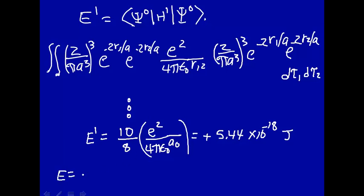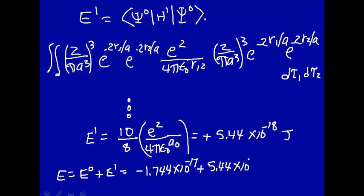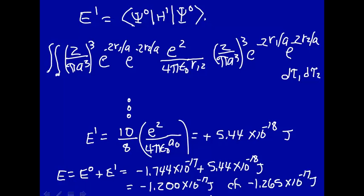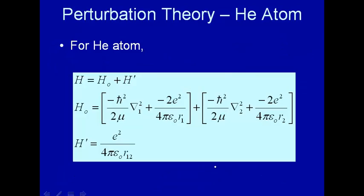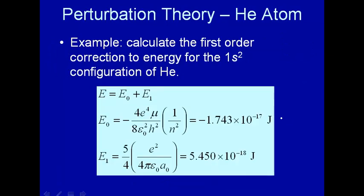So now our energy to first order is E0 plus this first-order correction. E0 was −1.744×10⁻¹⁷ J, plus 5.44×10⁻¹⁸ J, which comes out to approximately −1.2×10⁻¹⁷ J. The exact experimental value is −1.265×10⁻¹⁷ J. So it looks like the first-order correction made the energy of the helium atom come much closer to the actual measured experimental value. Perturbation theory works — we probably would have gotten a better value if the perturbation had not been so large.